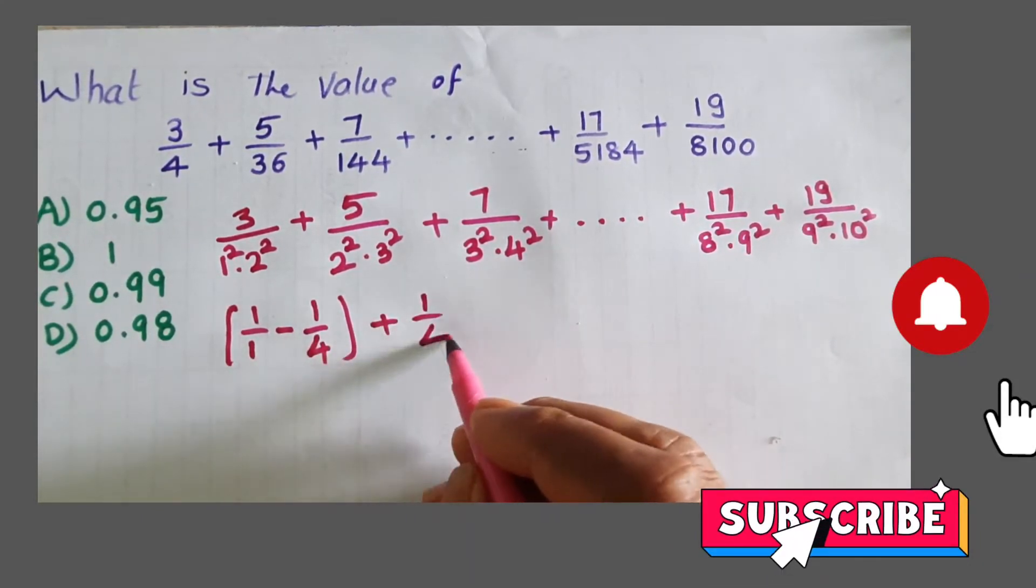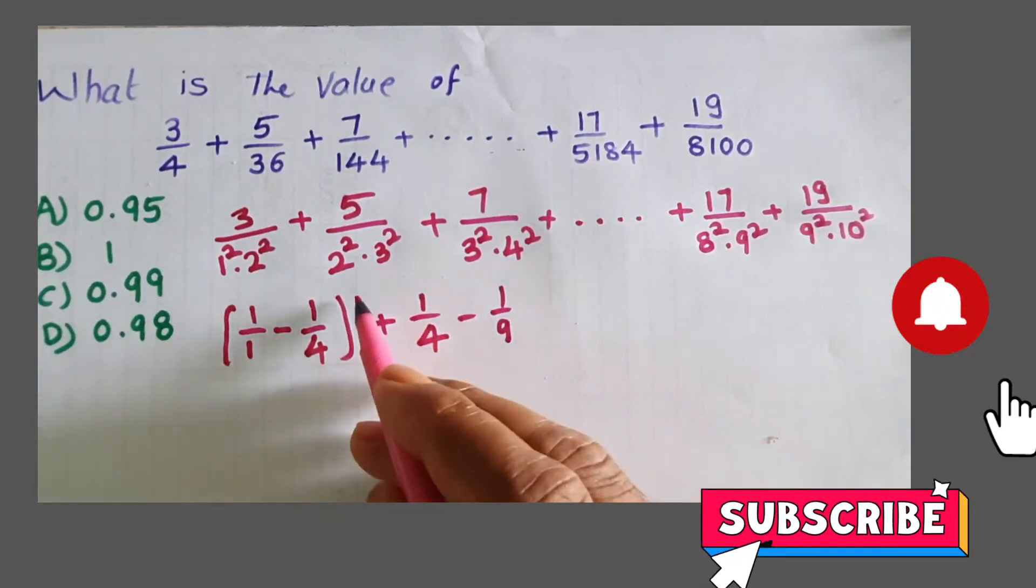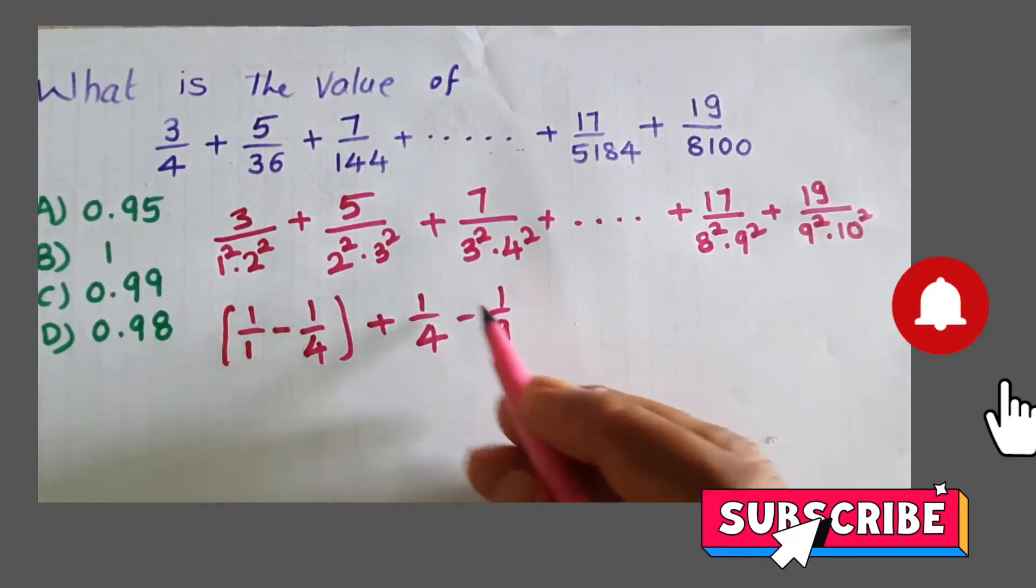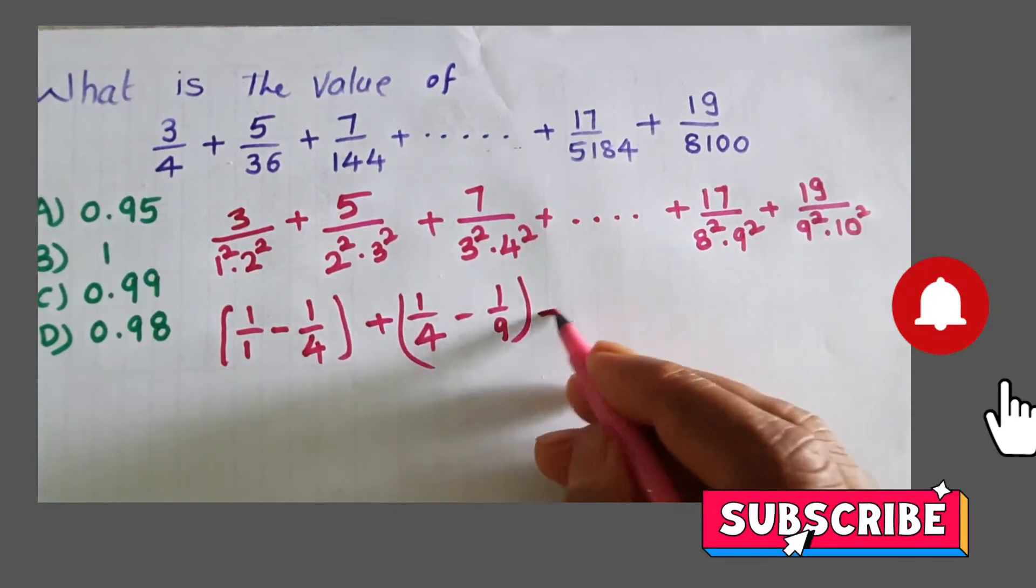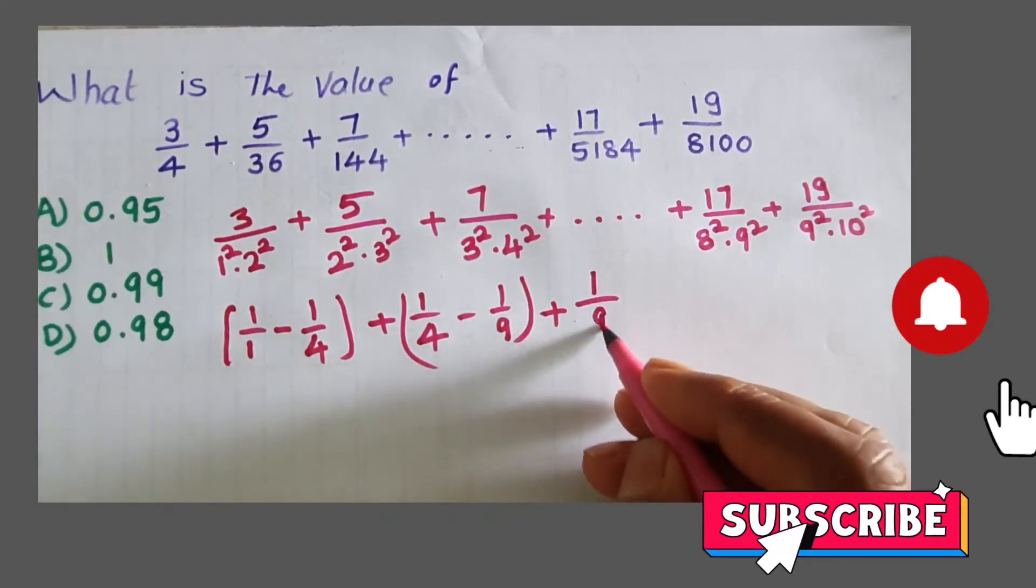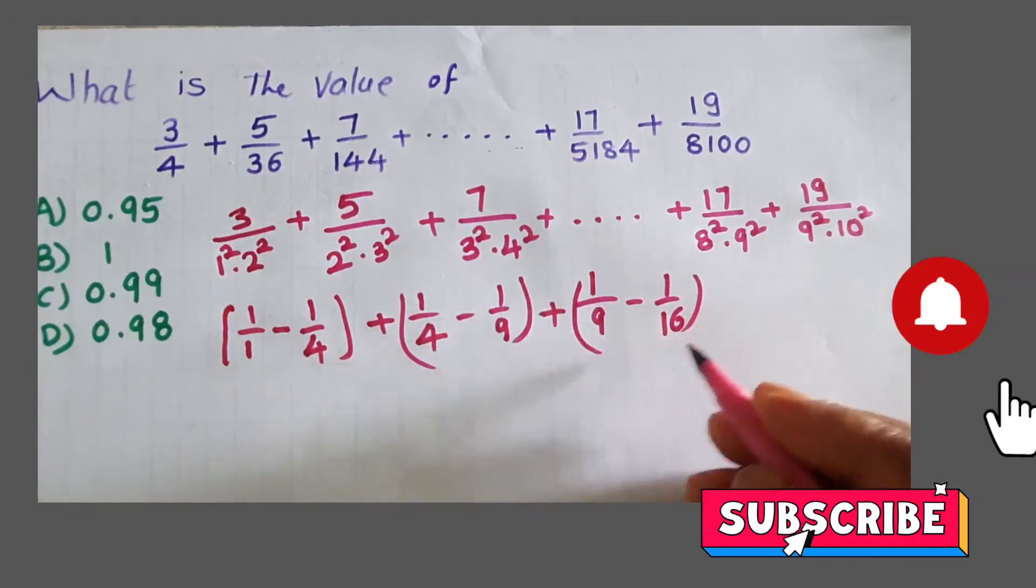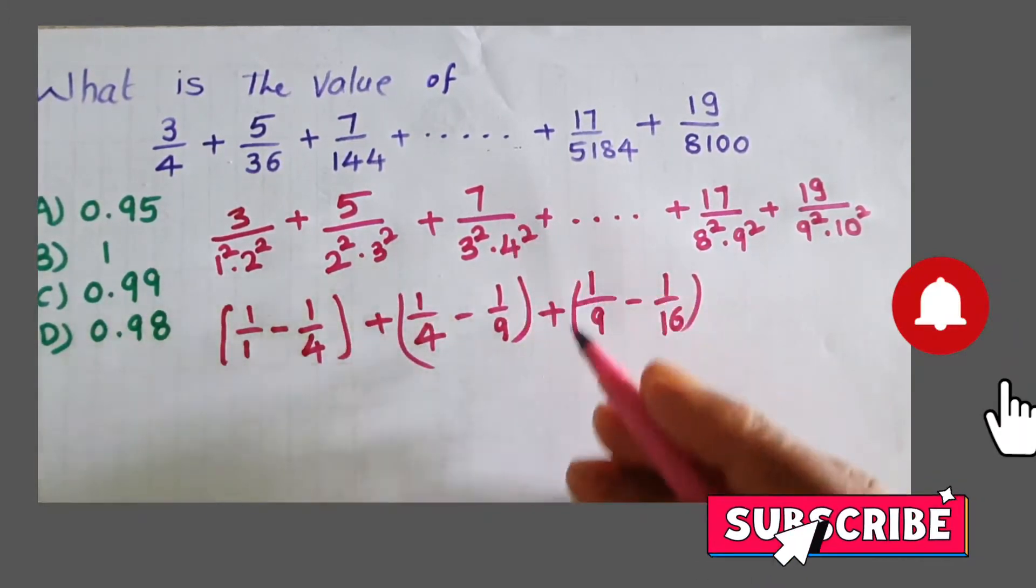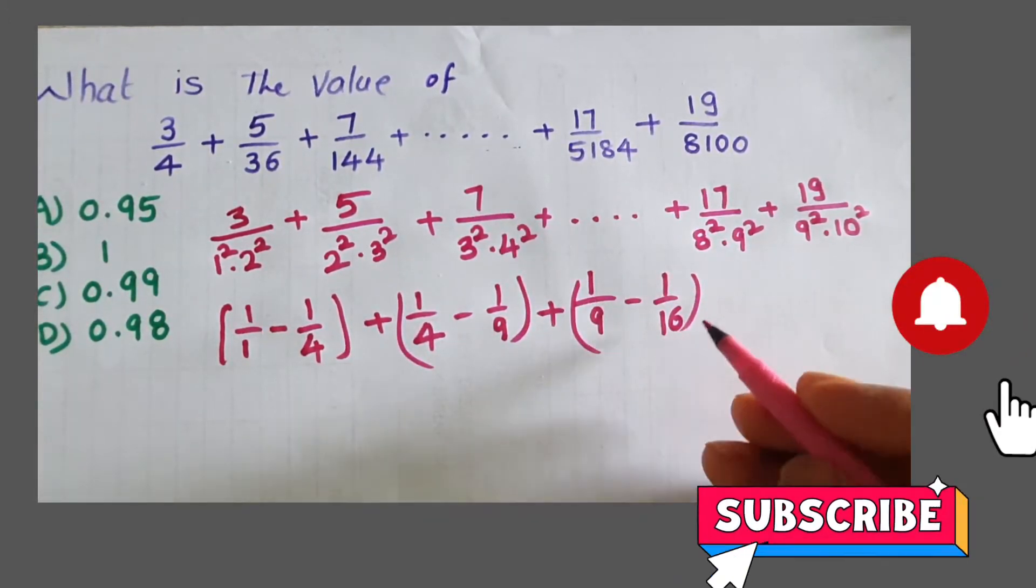Here, 1 by 4 minus 1 by 9 - 4 is 2 squared, 9 is 3 squared. Next, 1 by 9 minus 1 by 16. I write 16 minus 9 - that's 3 squared times 4 squared.